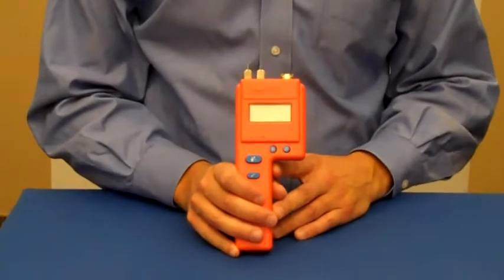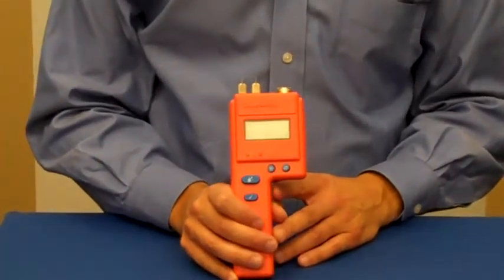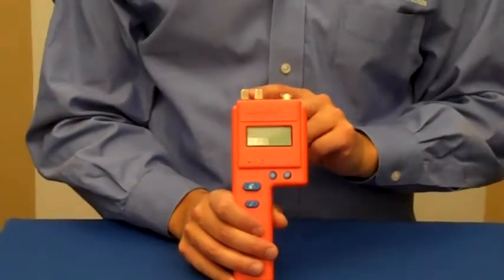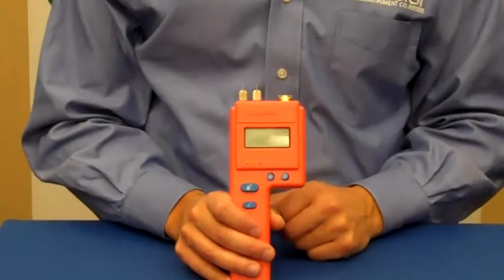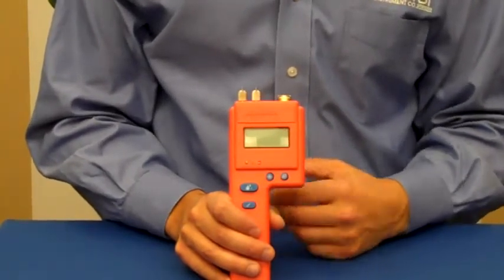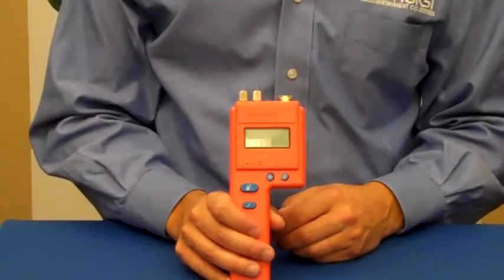The BD2100 is a pin-type moisture meter. It's very flexible in that it can measure moisture in drywall, wood, and other building materials like insulation and concrete.